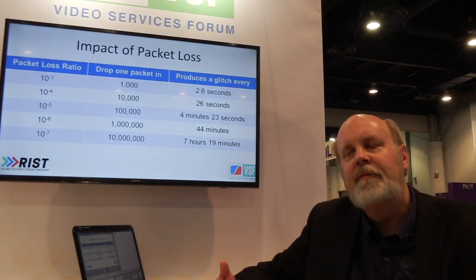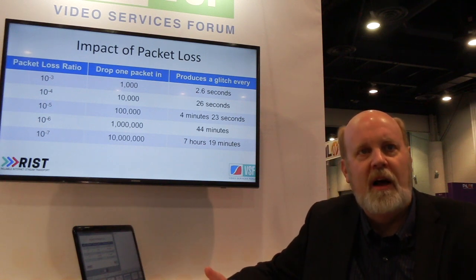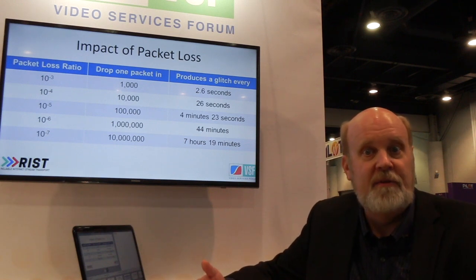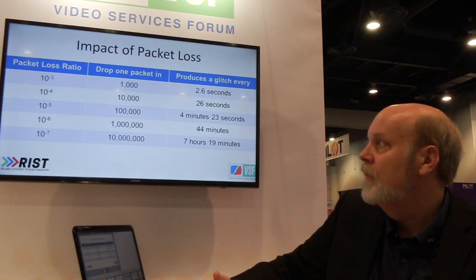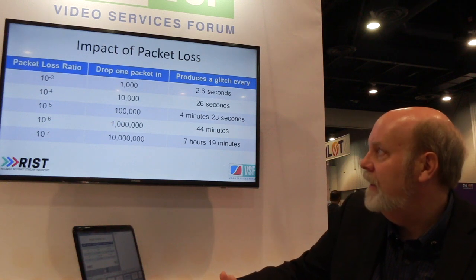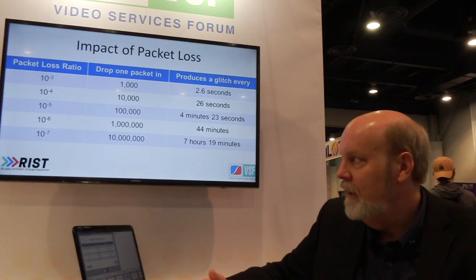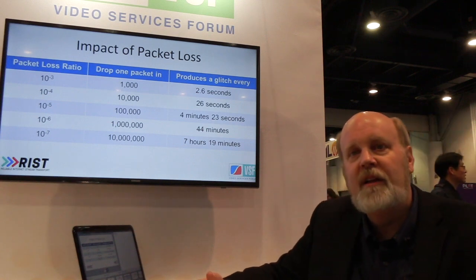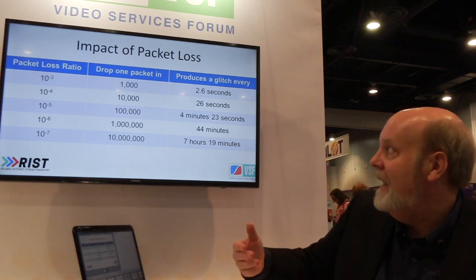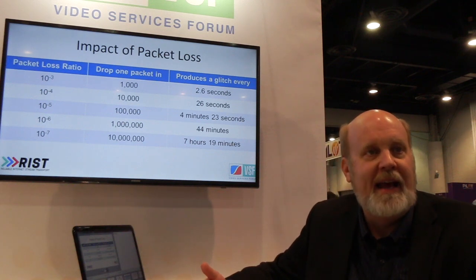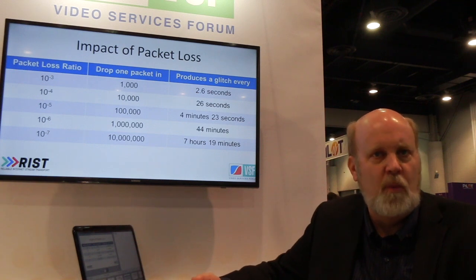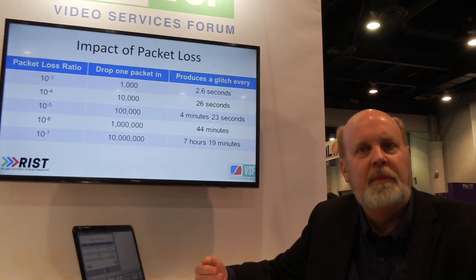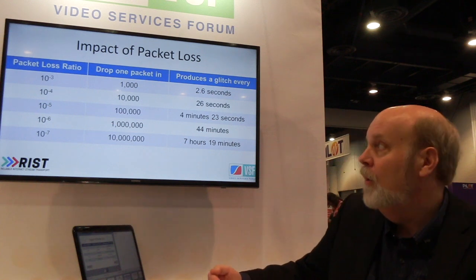So why are we doing this? Video signals — especially compressed video signals — are very sensitive to lost packets. If you drop packets at random, it can interrupt the ongoing video stream severely or marginally depending on exactly where you happen to hit it. These numbers are calculated based on packet loss ratios you might experience on real networks. At 10 to the minus three — dropping one packet in a thousand — that's a pretty low quality network. If I'm running a signal at four megabits per second, that means I'm going to lose a packet every 2.6 seconds, which means people may experience video freeze frames or possibly a loss of audio.